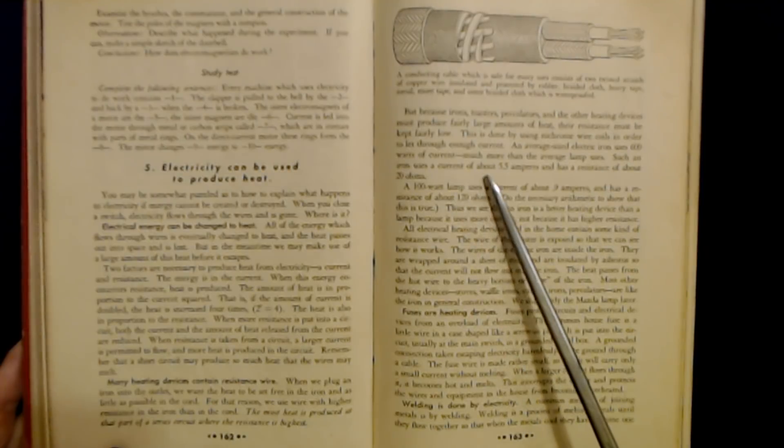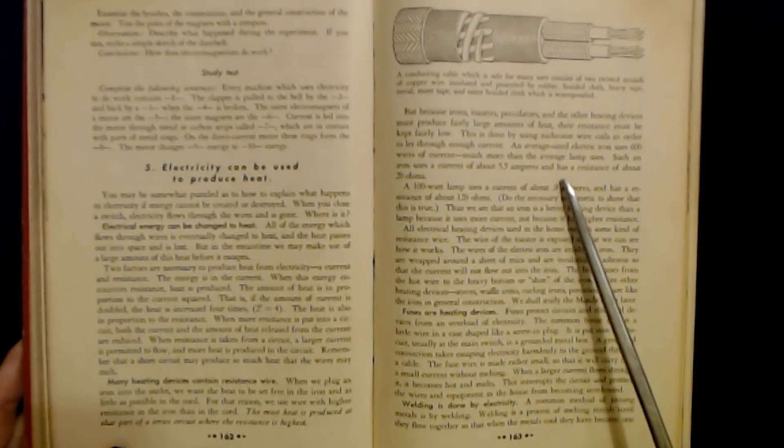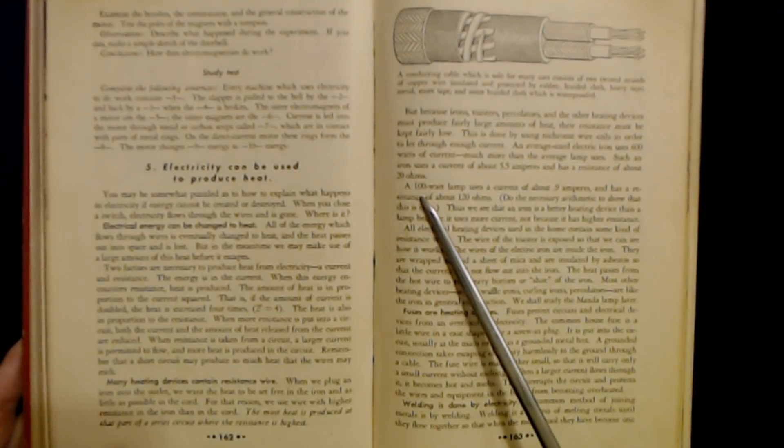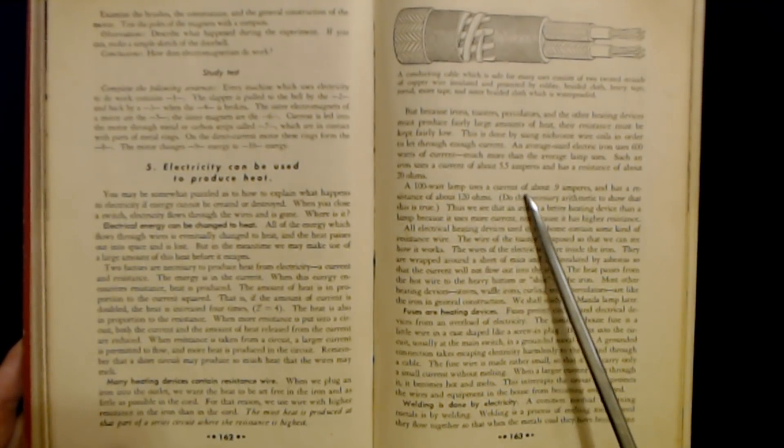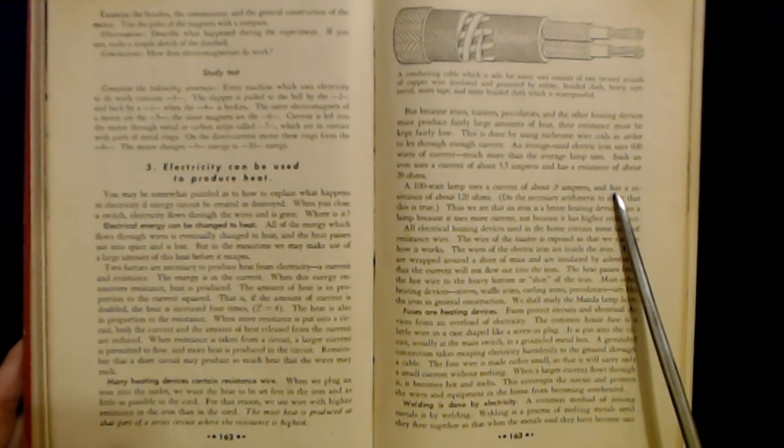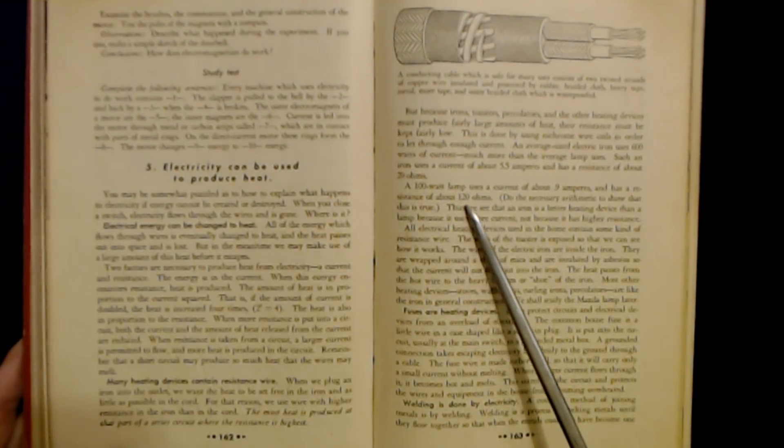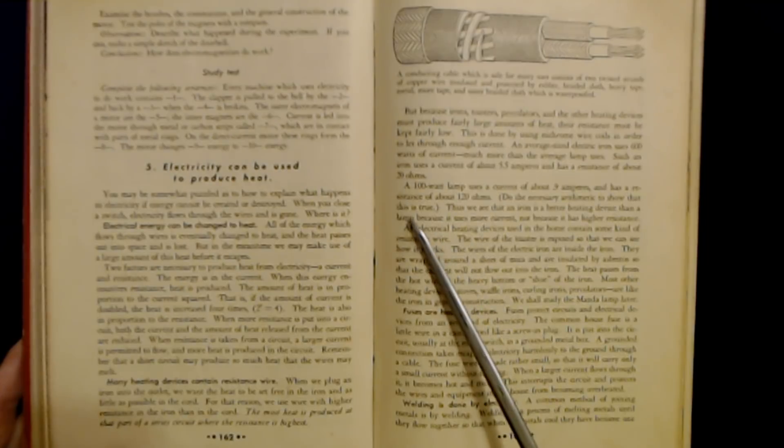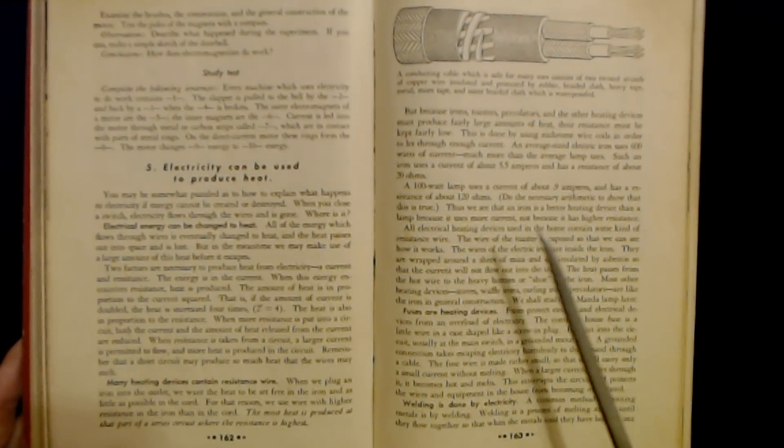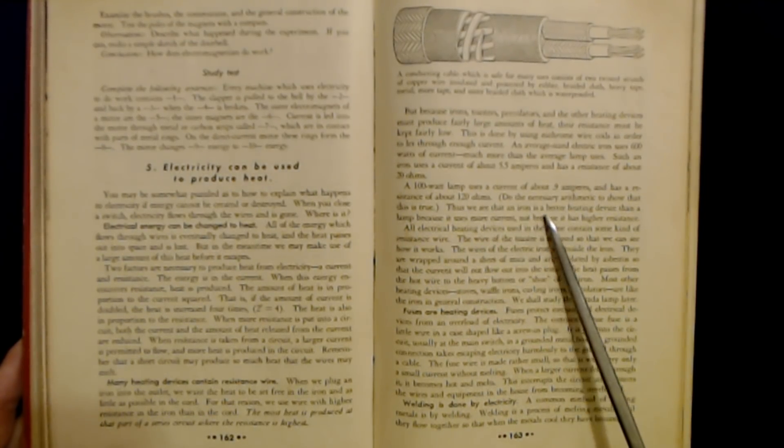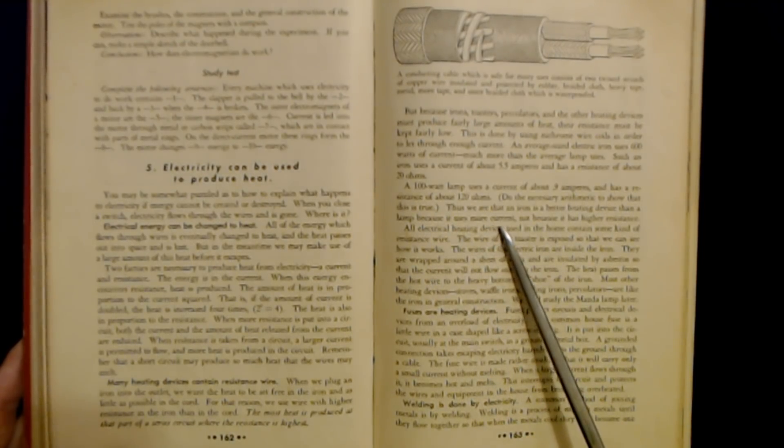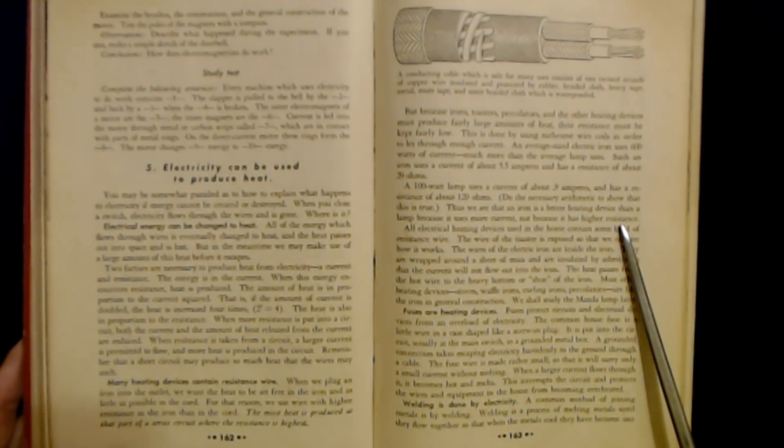Such an iron uses a current of about 5.5 amperes and has a resistance of about 20 ohms. A 100 watt lamp uses a current of about 0.9 amperes and has a resistance of about 120 ohms. Do the necessary arithmetic to show that this is true. Thus, we see that an iron is a better heating device than a lamp because it uses more current, not because it has higher resistance.